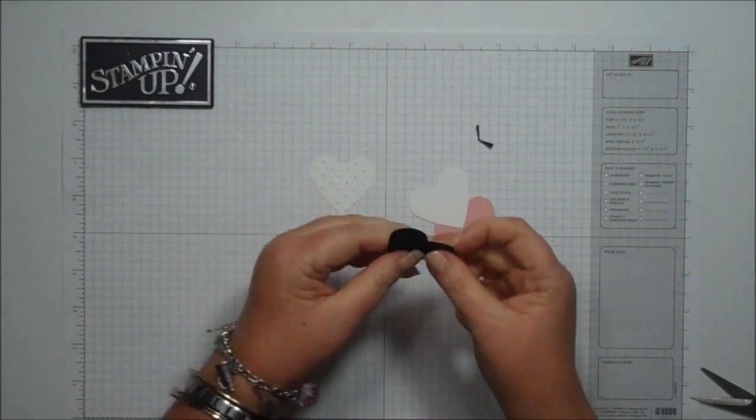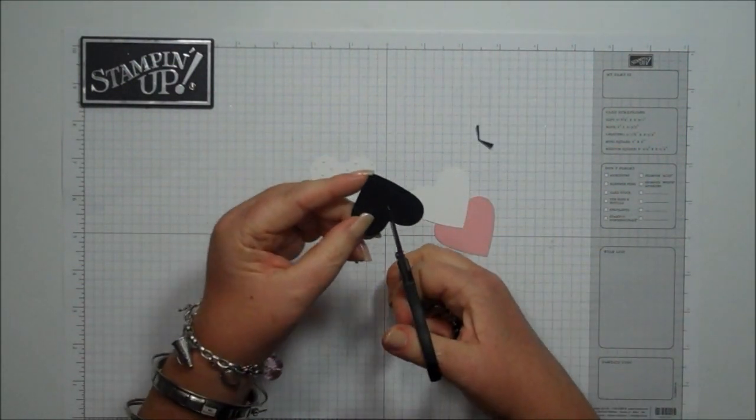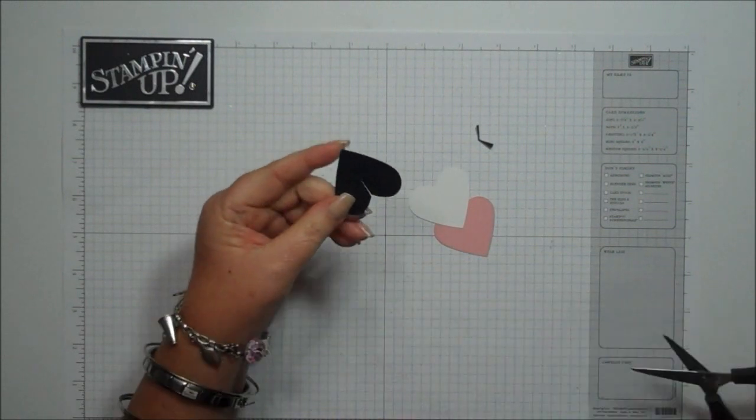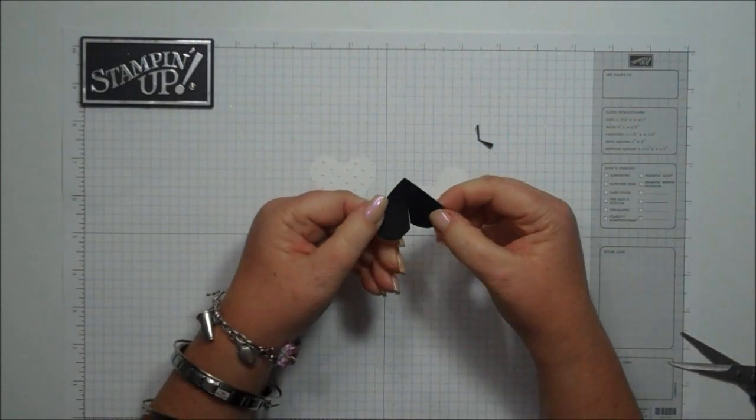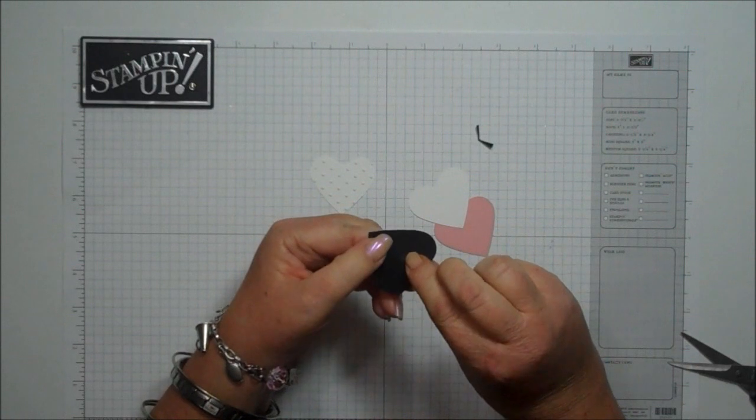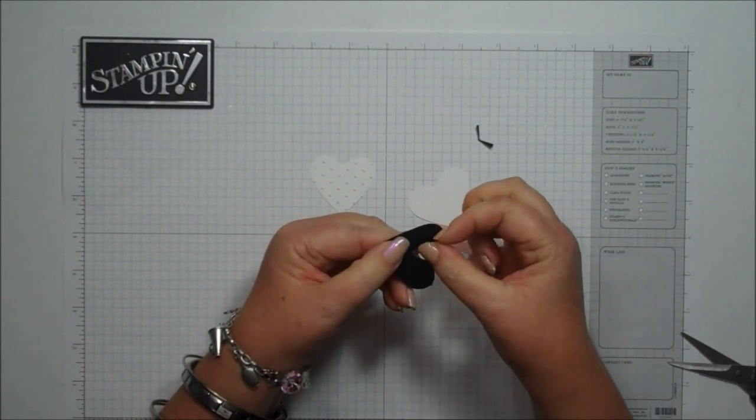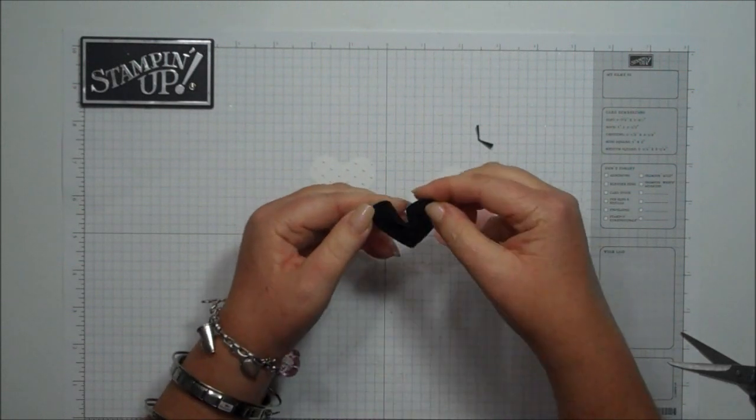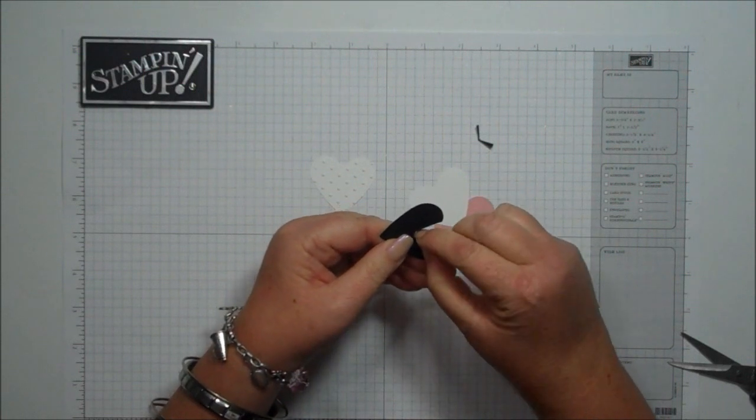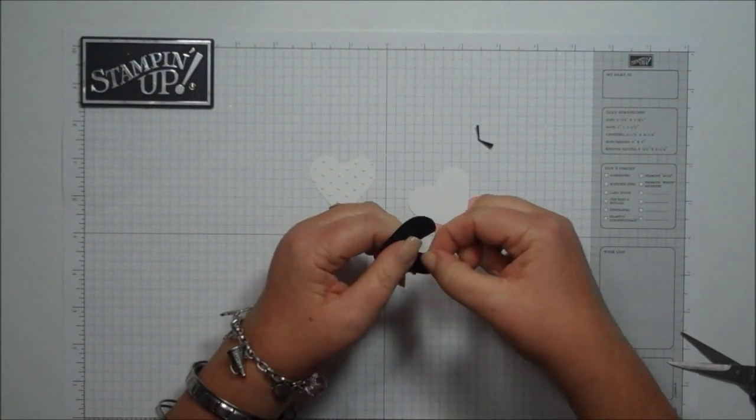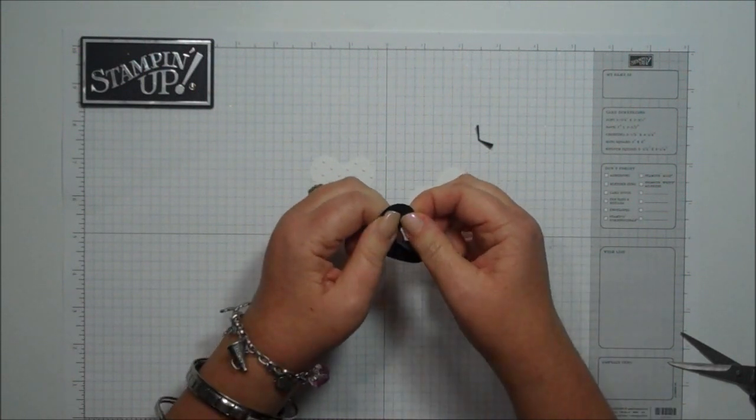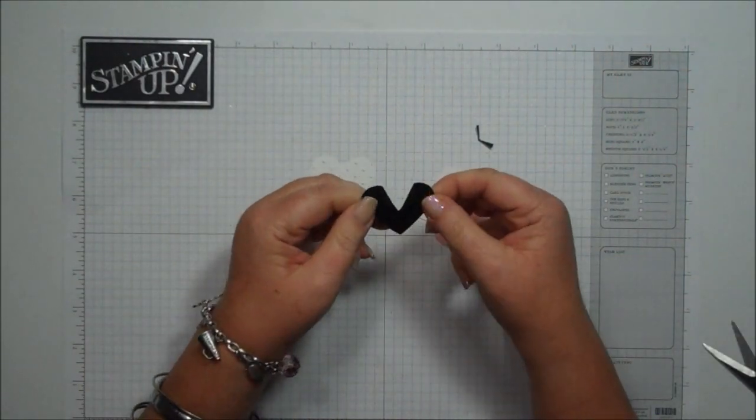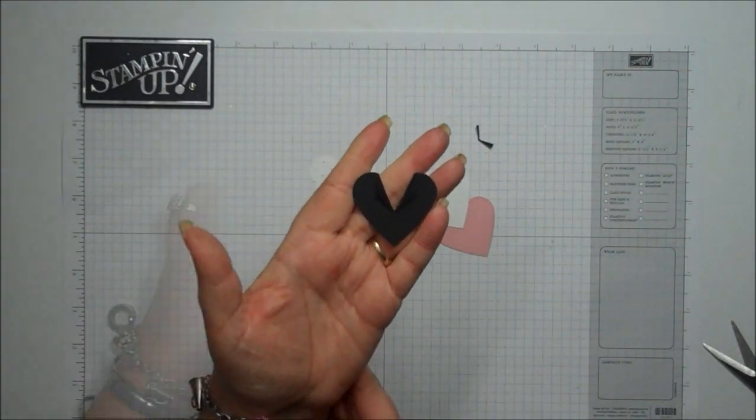Now to make your tuxedo part of your groom, you're going to go ahead and cut down the center of your heart, about a quarter of an inch, maybe half inch, and then you're going to fold back the cut lines, and then you're just going to make your lapels. So it should look like that.